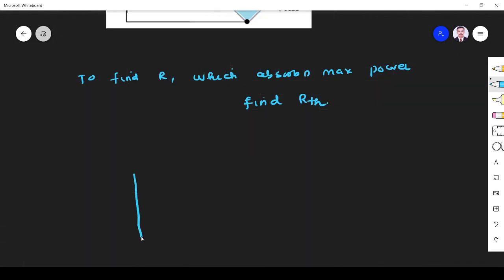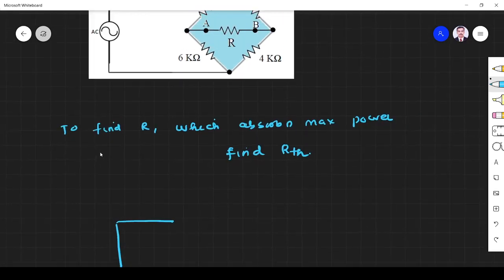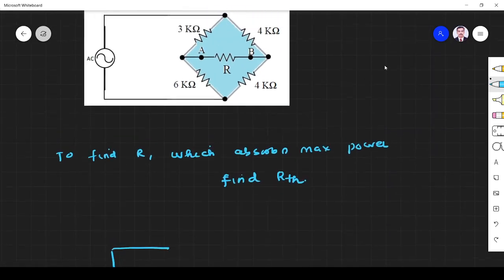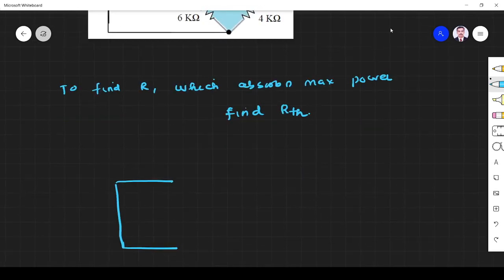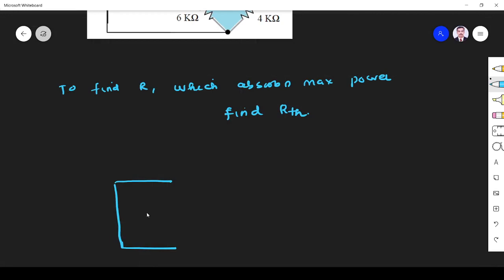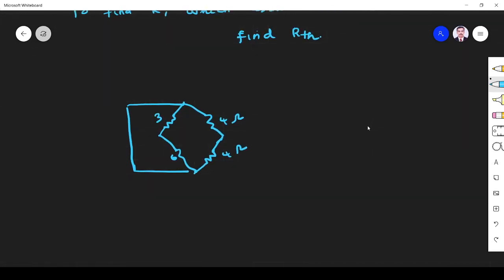I short the voltage source, the particular load resistor should be removed, and I have remaining this 3 and 6, 4 and 4. So it will be like this: 3, 3 and 6 here, it will be 4 ohm, this is 4 ohm.